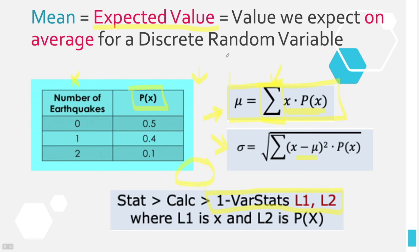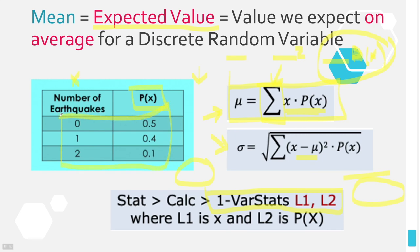For standard deviation, it's much more complicated. We'd need a fourth column for x minus mu, a fifth column for (x minus mu) squared, and a sixth column for (x minus mu) squared times p(x). Once we have that sixth column, we sum all those values and then take the square root. There's a lot of work to doing this, and this is about the simplest probability distribution we could hope for.